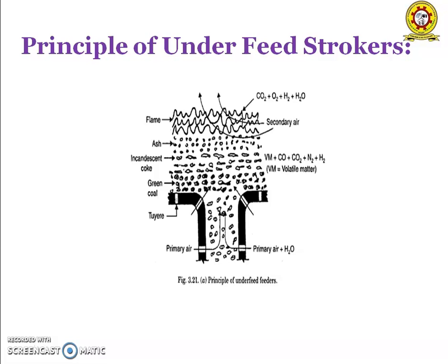This is the block diagram for the under feed stoker. Air entering through the holes of the grate comes in contact with the raw fuel and it passes through the incandescent fuel where the reaction is similar to the over feed system. The gases produced may pass through the layer. Secondary air is supplied to complete the combustion.